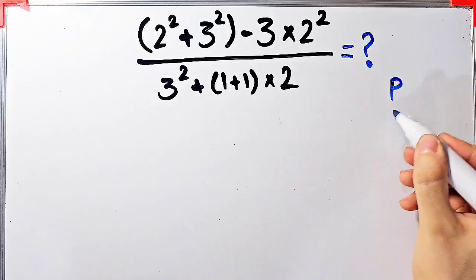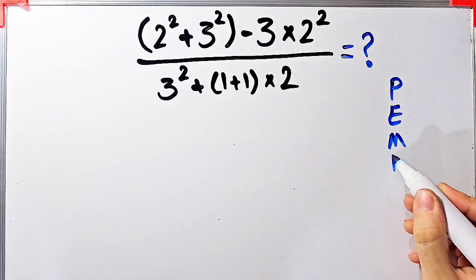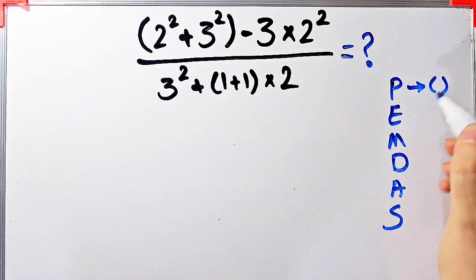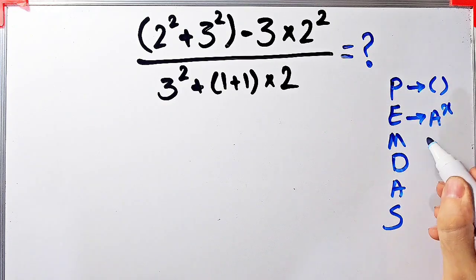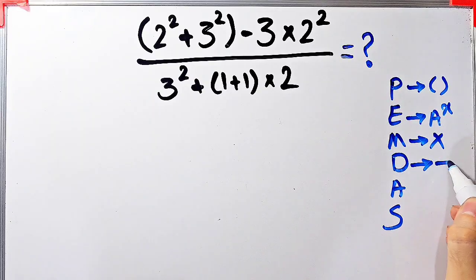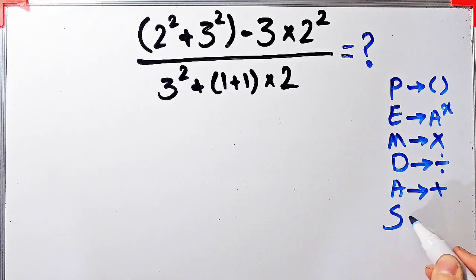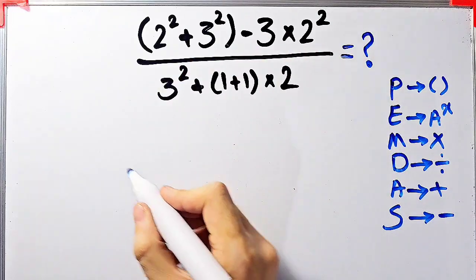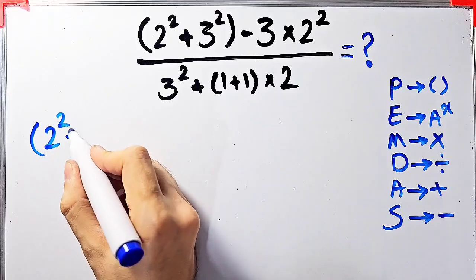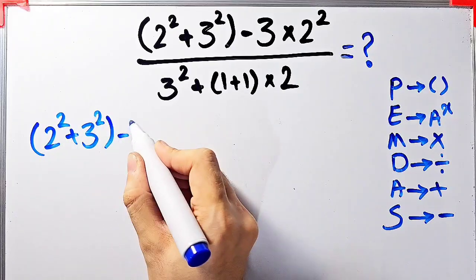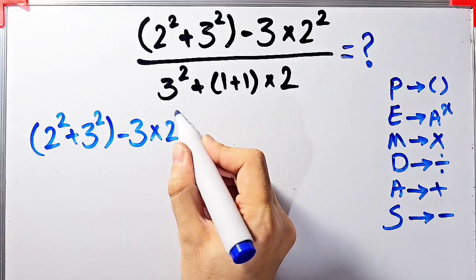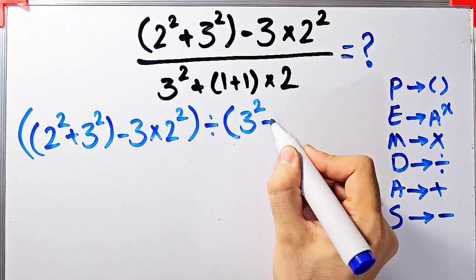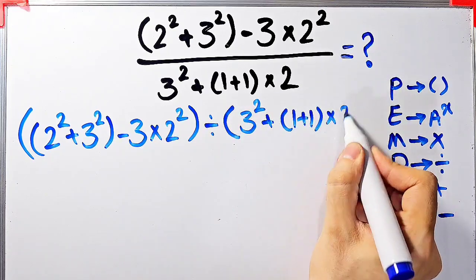To solve this question we need to follow the PEMDAS rule. PEMDAS shows the priority of the mathematical operations. P stands for parentheses, E stands for exponent, M stands for multiplication, D stands for division, A stands for addition, and S stands for subtraction. In the numerator we have 2² + 3² − 3 × 2², and in the denominator we have 3² + (1 + 1) × 2.